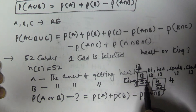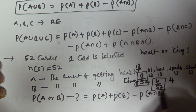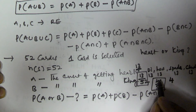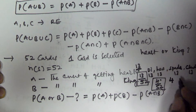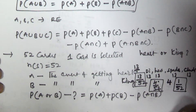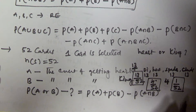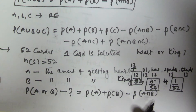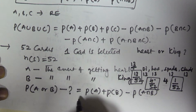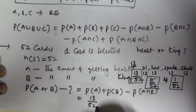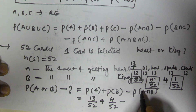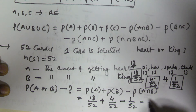Now we need the probability of getting a king with a heart. Of the four kings, one is diamond, one is heart, one is spade, and one is club. So only one card is both a heart and a king, giving us one by fifty-two. Substituting the values: thirteen by fifty-two plus four by fifty-two minus one by fifty-two.